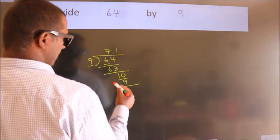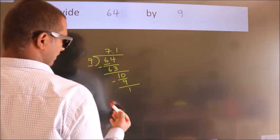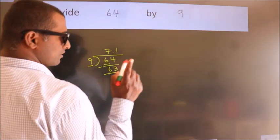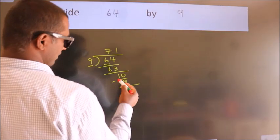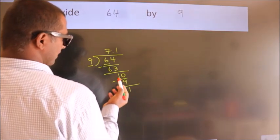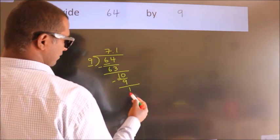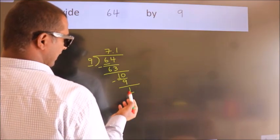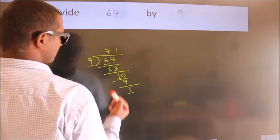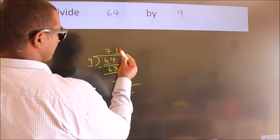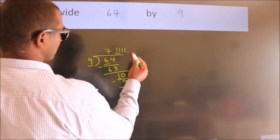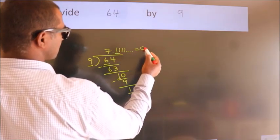Now we subtract. We get 1. Now you observe: we had 1 here and we got 1 again. That means this number keeps on repeating. So this is our quotient.